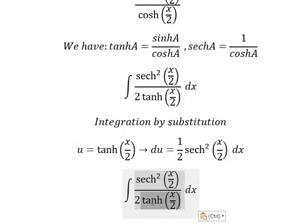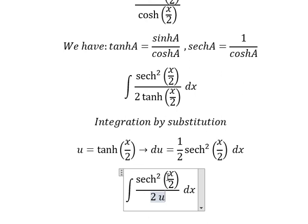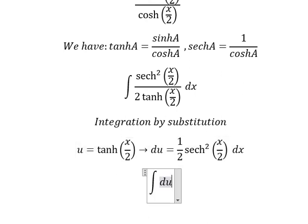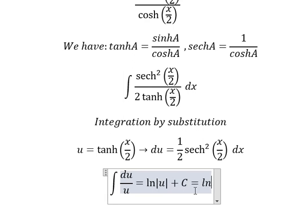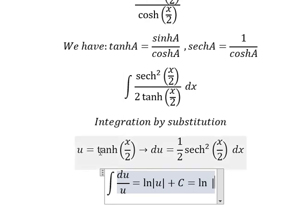This one we change to u. This one here we change by the u. And we have ln of the absolute value of u, and we put C where u is this one.